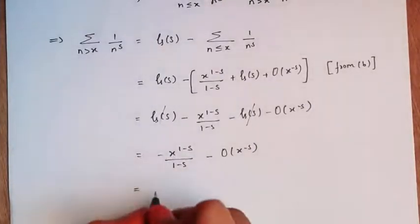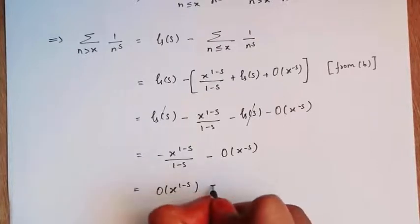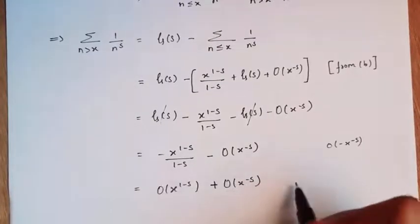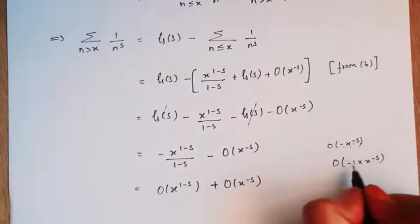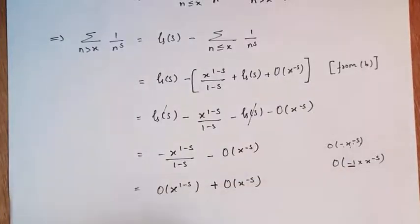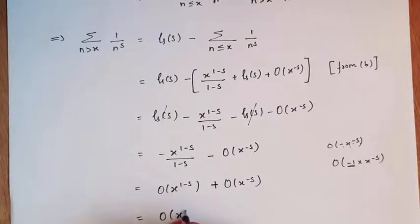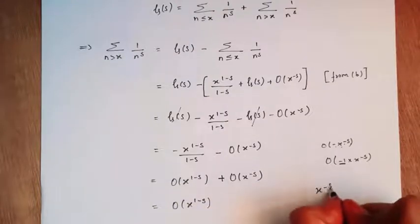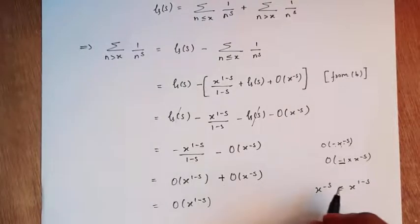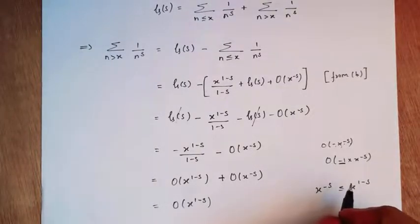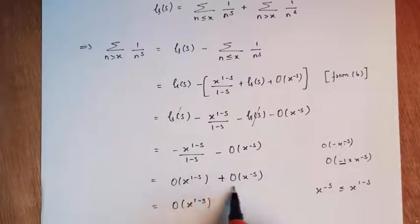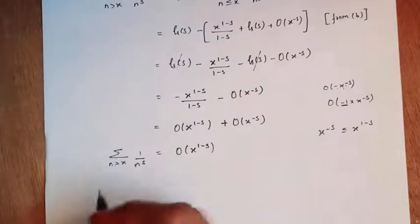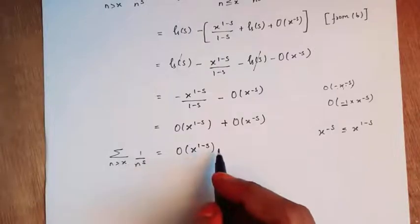I can write this using big O notation as big O(x^(1-s)) plus big O(x^(-s)). Since x^(-s) ≤ x^(1-s), and in a big O function constant terms are neglected, we simplify the combined expression to big O(x^(1-s)). Thus the sum over n greater than x of 1/n^s equals big O(x^(1-s)). Hence the proof for Part C.